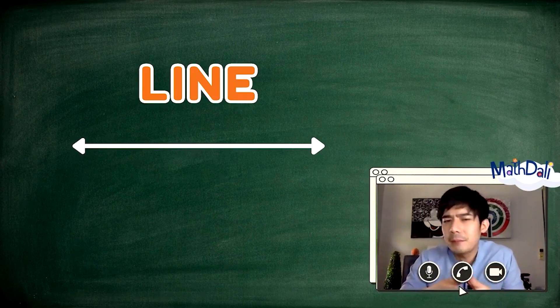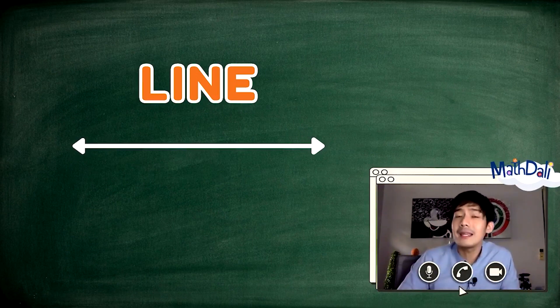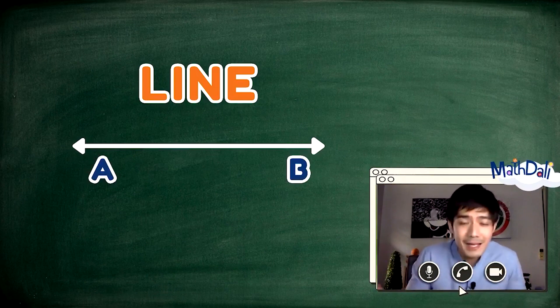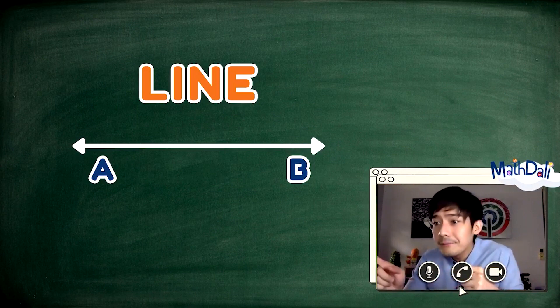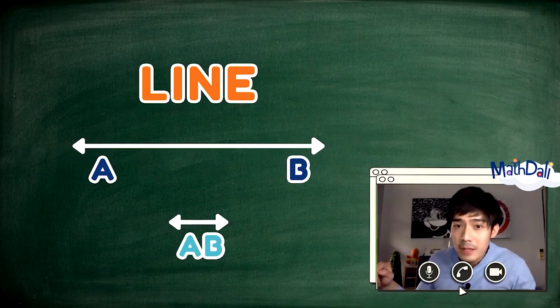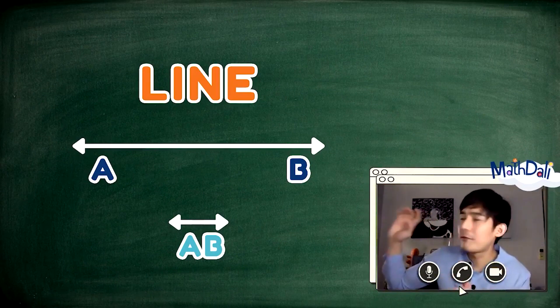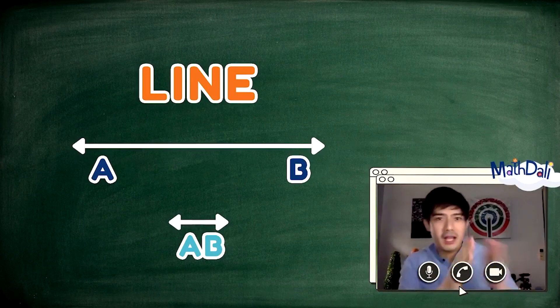Kung ganito ito isusulat, paano naman ito binabasa? Binibigyan ng pangalan ang mga linya. Pero, di tulad ng mga pangalan natin, ginagamitan lamang ito ng isa o dalawang titik para mas madaling tandaan at isulat. Halimbawa, itong horizontal line, pwede natin itong tawaging line AB. Pero, pwede rin line BA. Kasi pareho naman siyang, so, forever naman papunta doon at forever papunta doon. Tsaka line siya talaga.